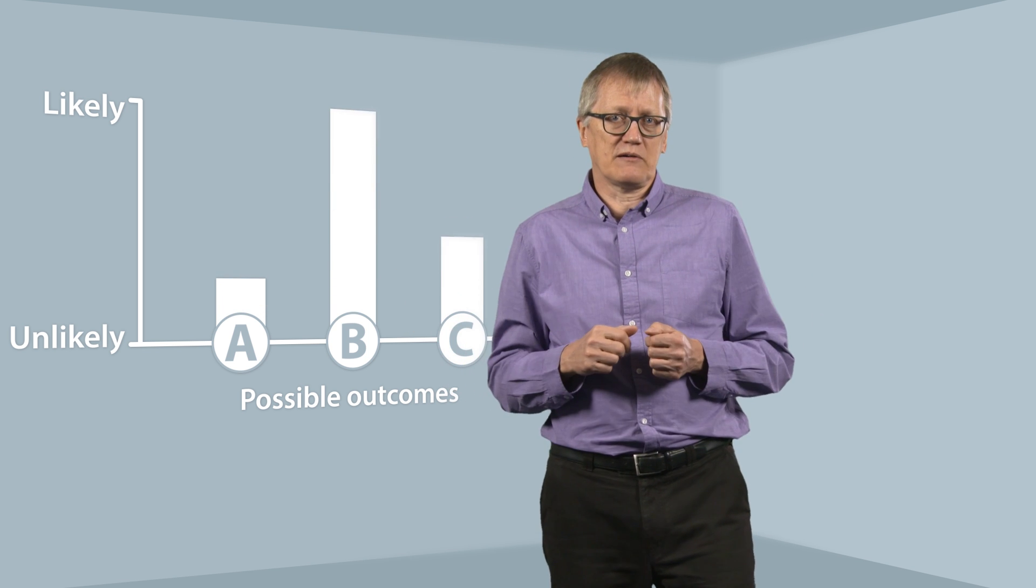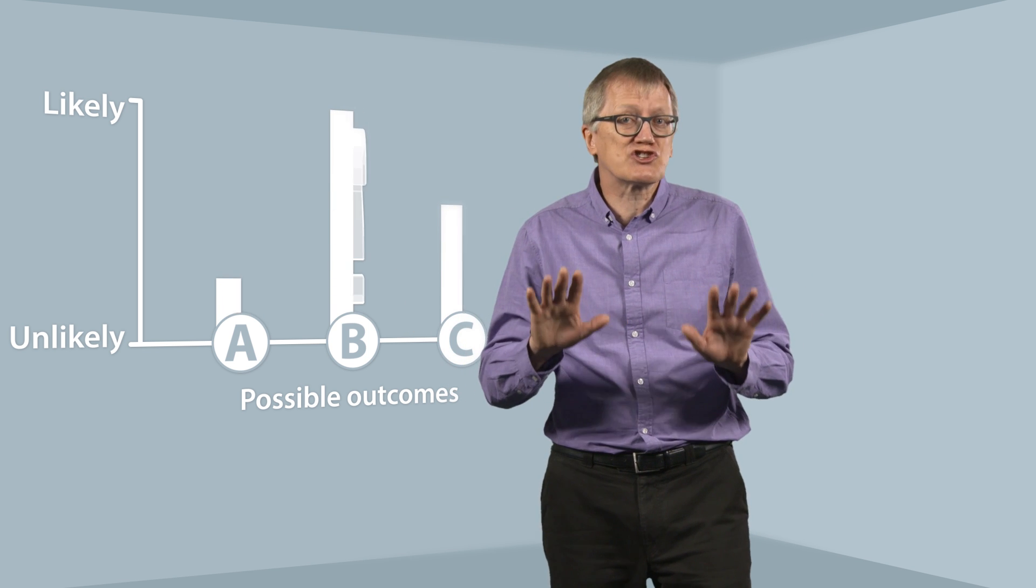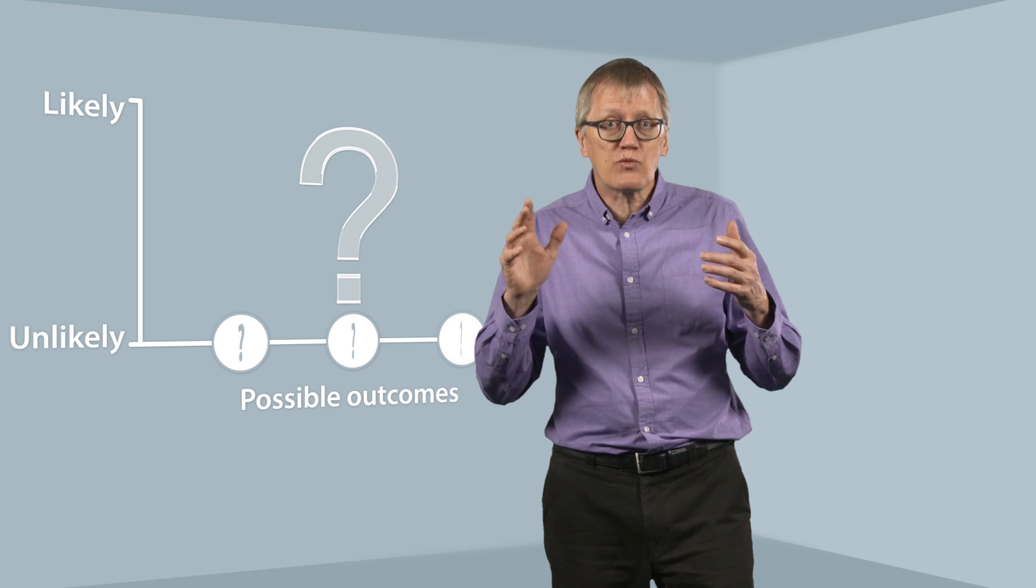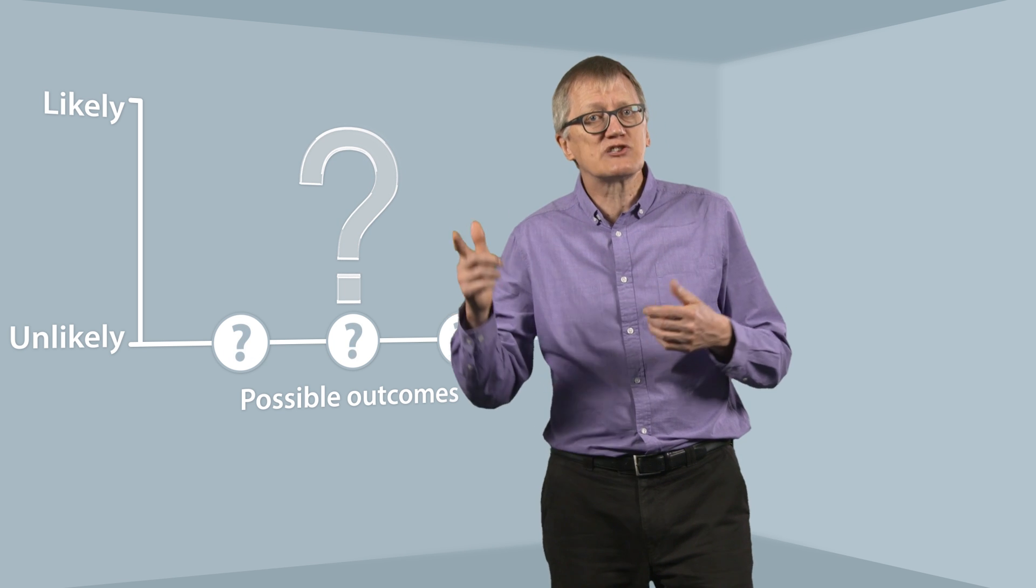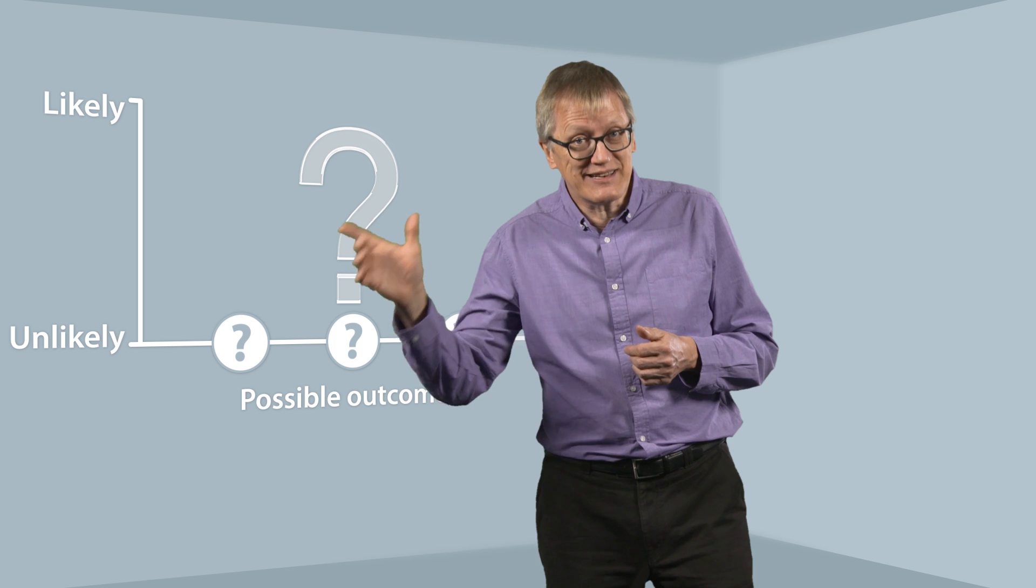The role of scientists is to provide scientific advice. The critical point is that our advice should be more than just a best estimate. People making decisions need information on the range of things that might happen and how likely they are. If the uncertainty is just too great to provide this, then we need to make that clear so it can be taken into account in decision making.